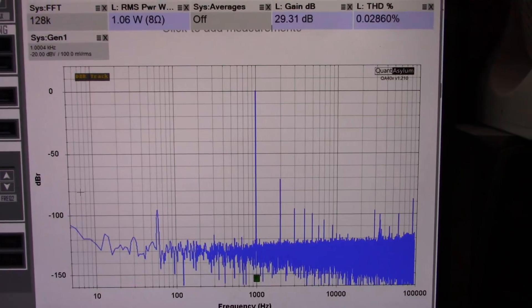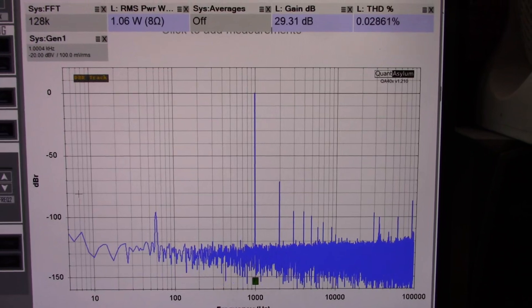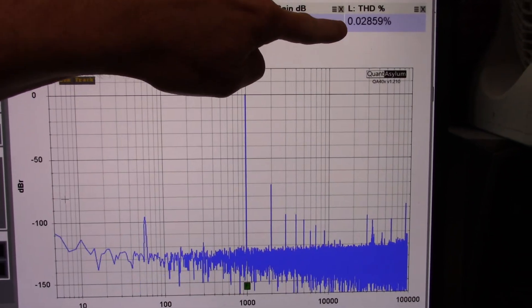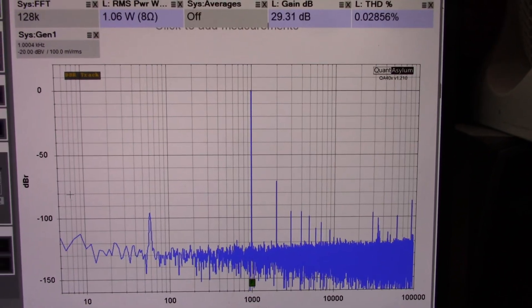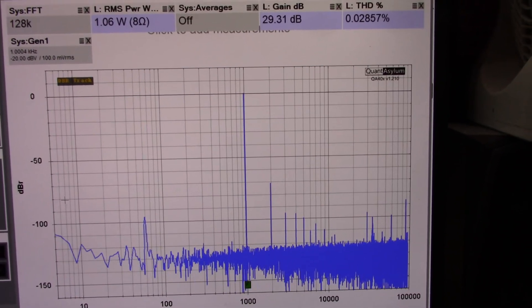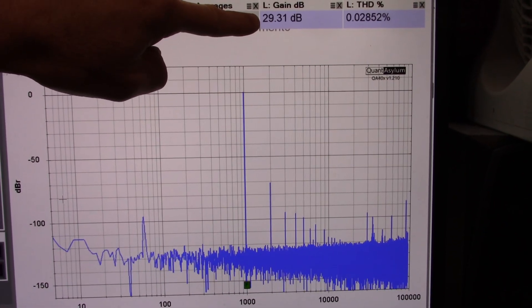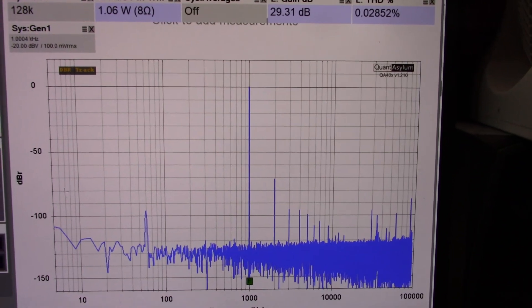Here are our kickoff measurements at 1 watt, 8 ohm, and 0.028 percent total harmonic distortion. The gain of the amplifier is measuring at 29.31 decibels.